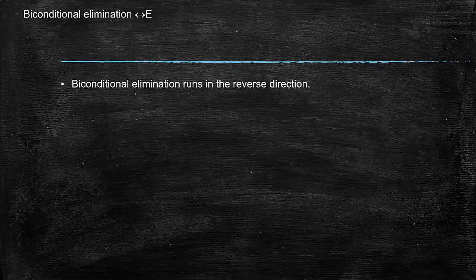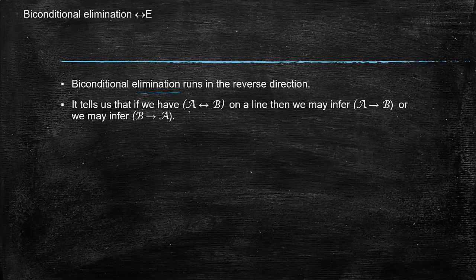So biconditional elimination runs in the reverse direction. It tells us that if we have A if and only if B on a line, then we may infer if A then B, or alternatively we may infer if B then A. So make sure you understand that. You're not allowed to actually infer if A then B and if B then A as we earlier explained. It's just one or the other.